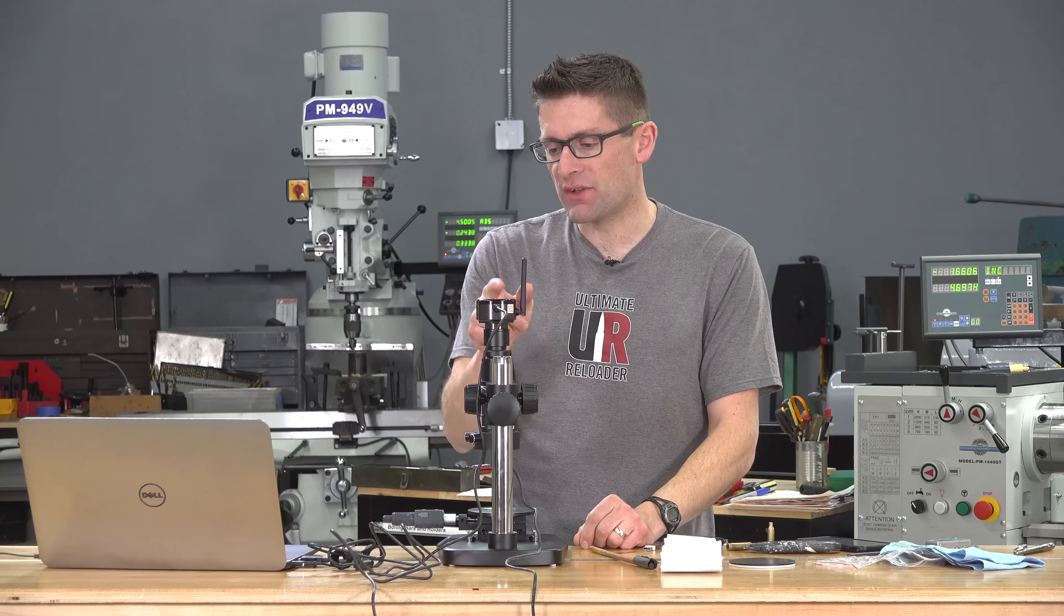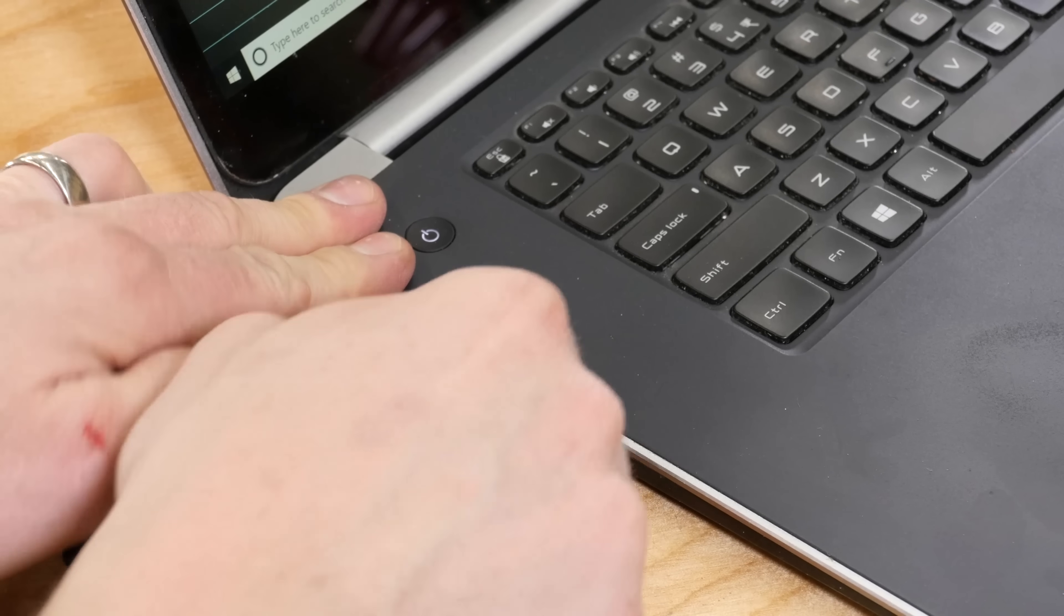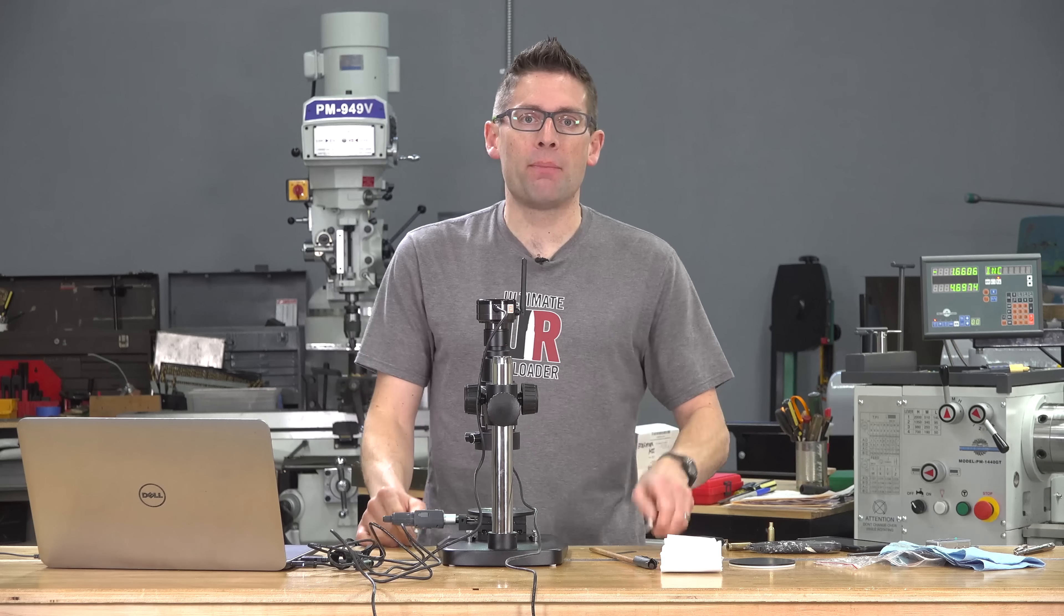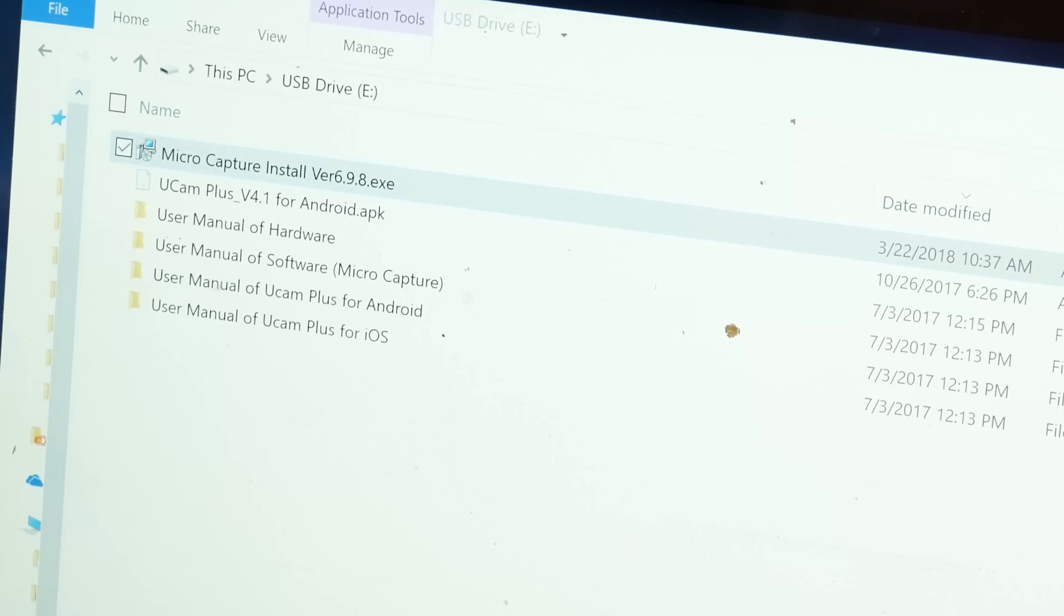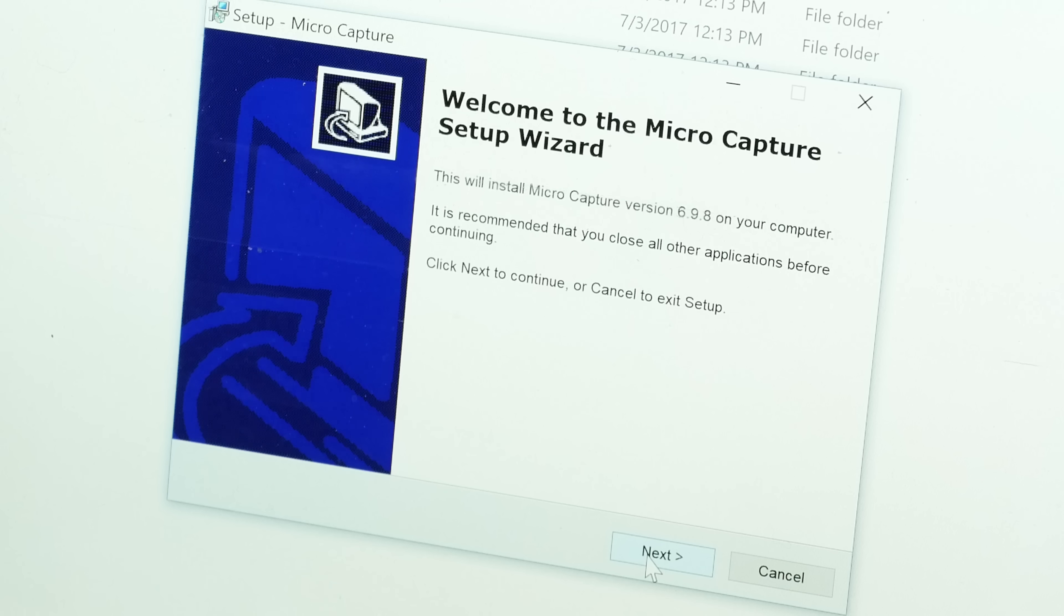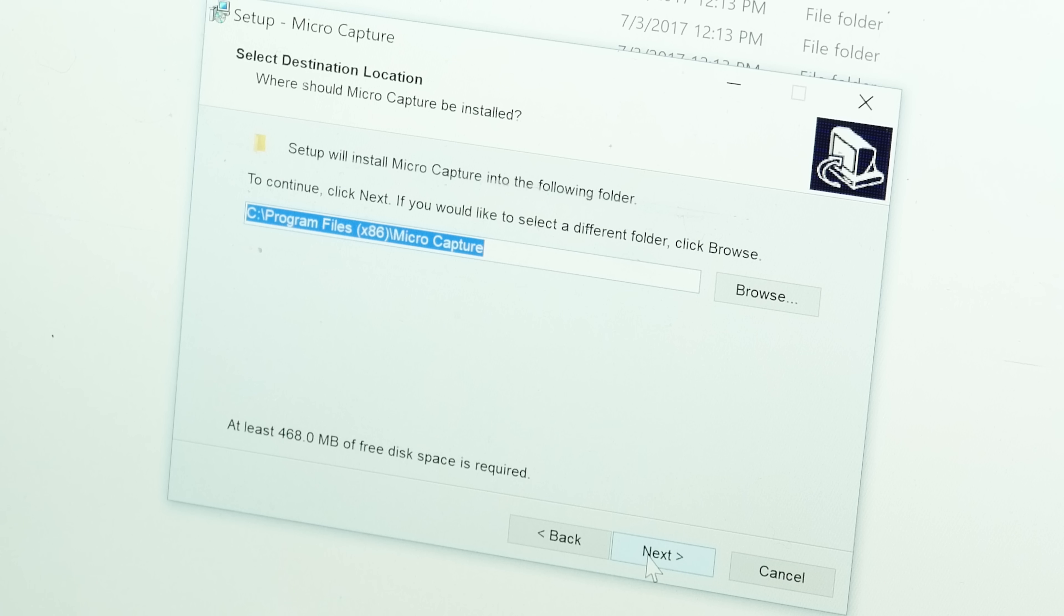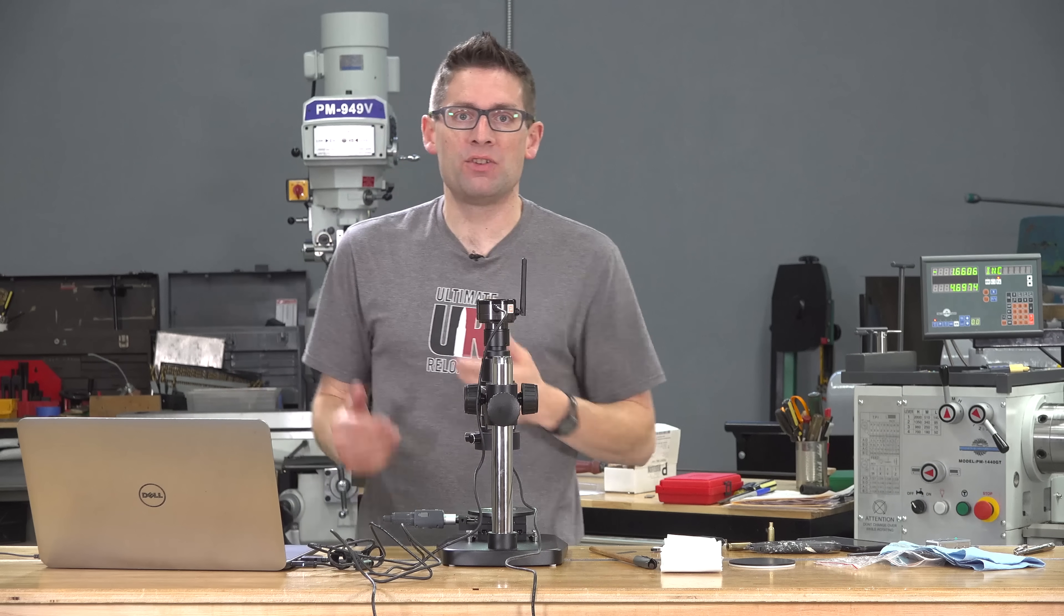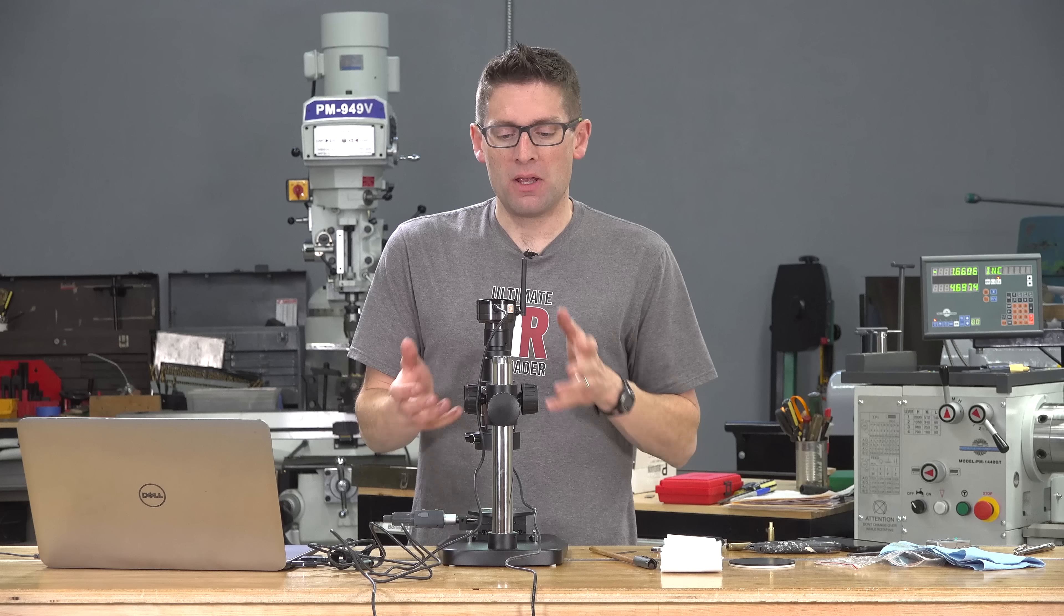So I switched the switch over to USB, plugged both cables into the PC here, and then went to install the app. The app is installed by double-clicking on the executable at the root folder of the USB thumb drive and answer a couple prompts, and it's installed on the PC. Once the microscope was plugged in and the app was running, boom, the image came up and I was able to start playing with it.